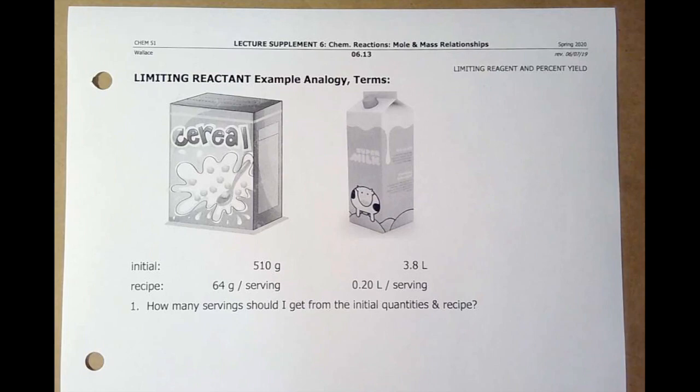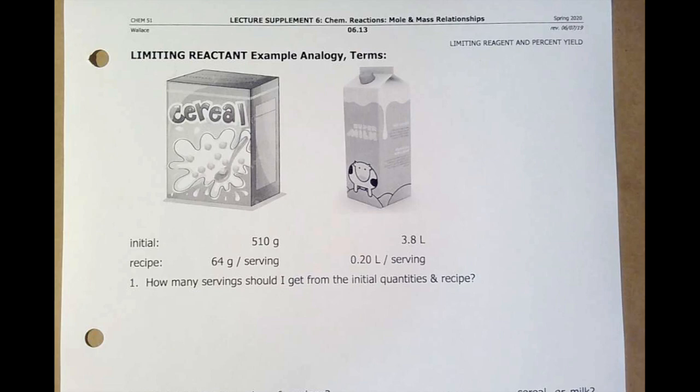So I want to start off with this analogy. I'm a big cereal fan. My family eats a lot of cereal. I've had occasions where I was recuperating from a medical situation, almost all I ate was cereal. And I always ran into this problem. So here I've got a box of cereal, 510 grams. It says 64 grams per serving. The milk, same thing, I measured it out. It turns out it's 0.20 liters per serving was what I was getting. So here's what I want to know. I've got 500 grams roughly of cereal and I've got 3.8 liters of milk. How many servings should I get?